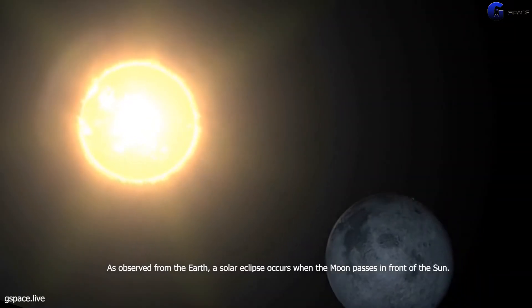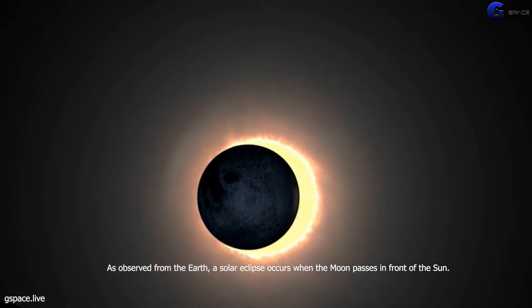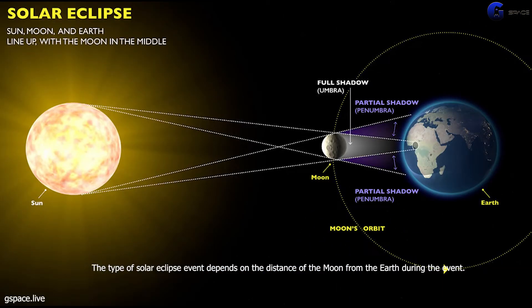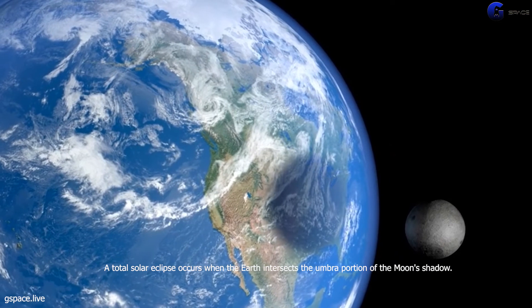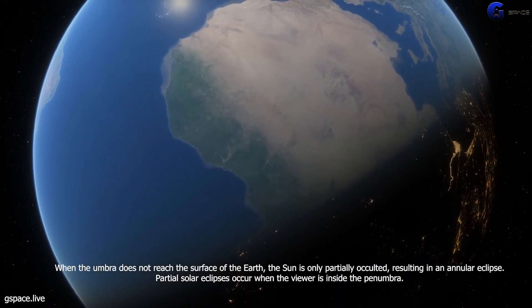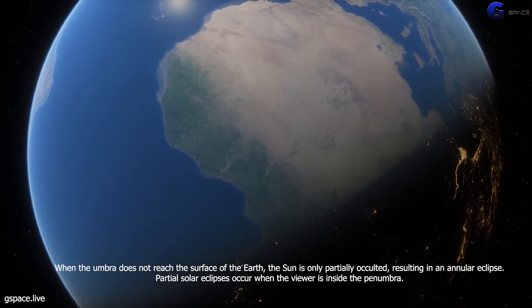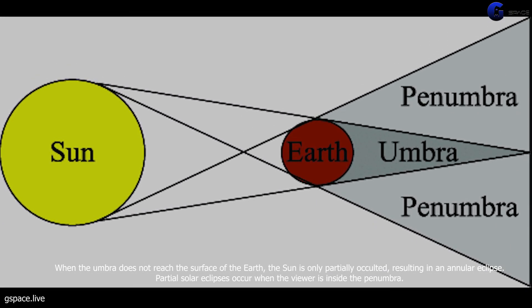Solar eclipse. As observed from the earth, a solar eclipse occurs when the moon passes in front of the sun. The type of solar eclipse event depends on the distance of the moon from the earth during the event. A total solar eclipse occurs when the earth intersects the umbra portion of the moon's shadow. When the umbra does not reach the surface of the earth, the sun is only partially occulted, resulting in an annular eclipse. Partial solar eclipses occur when the viewer is inside the penumbra.